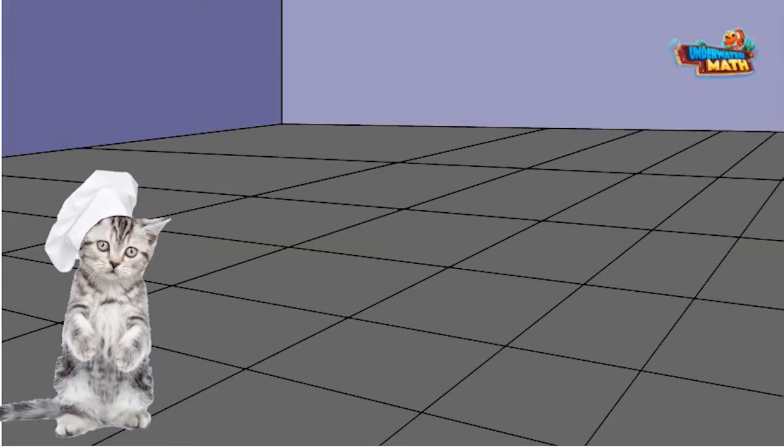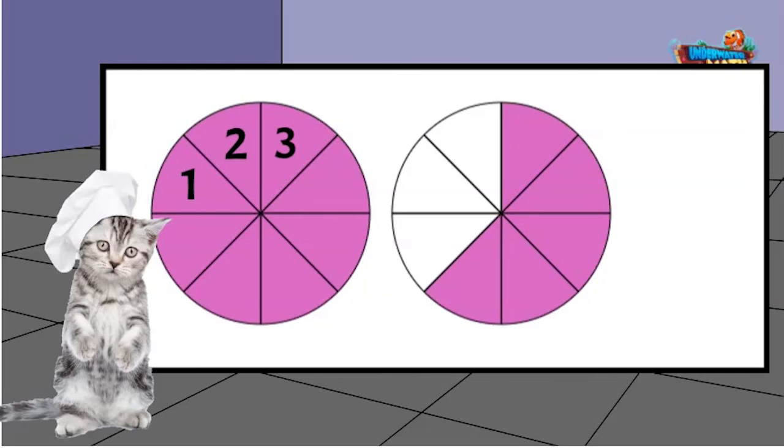I drew a model of the cake that is left. There are eight pieces in each cake. The white spaces represent what the kittens ate. There is one whole cake left and five out of eight of the last cake. This means I have one and five eighths of the cake left.